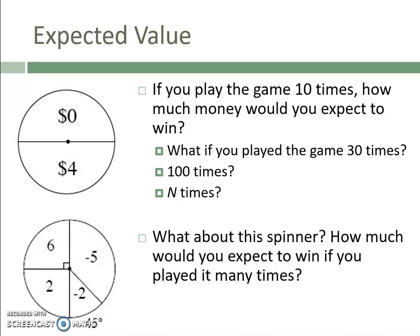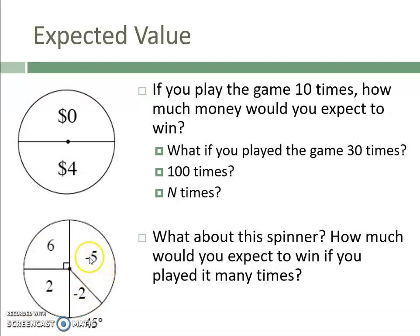Looking at the pattern, you always get double — two times n dollars when playing n times. That one wasn't too tricky because the spinner is split evenly. But what about a different spinner with a quarter of the time for six, a quarter for two, one-eighth for negative two, and three-eighths for negative five? It's a little more complicated, so we need a formula.